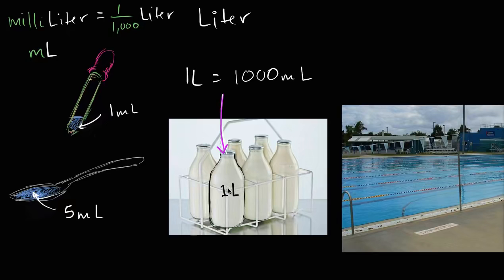So what do you think would be if one milk bottle has a fluid volume of 1 liter, what do you think about a whole swimming pool? Well, actually, a swimming pool like this, if it is 25 meters wide and 50 meters long and two meters deep, it actually would have a fluid volume of 2.5 million liters.